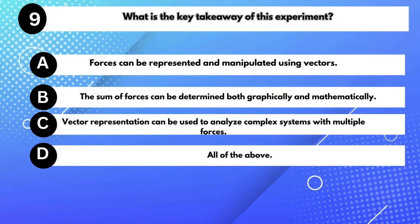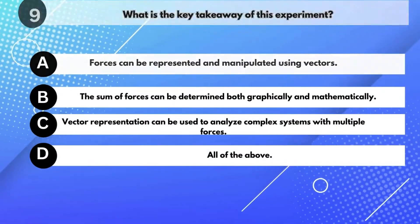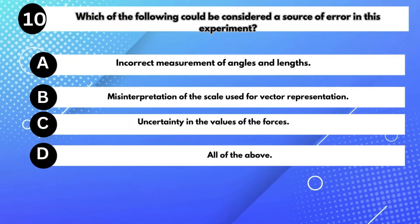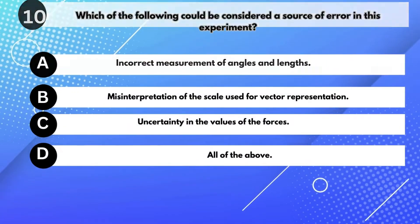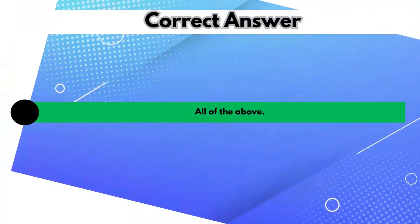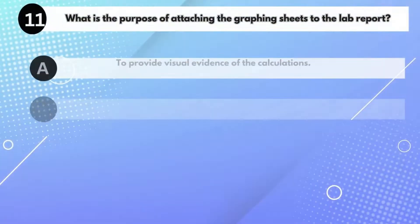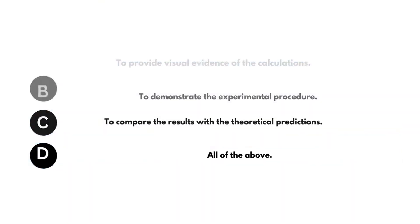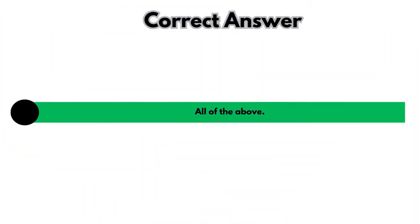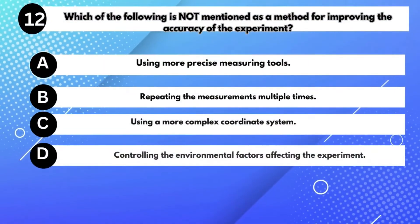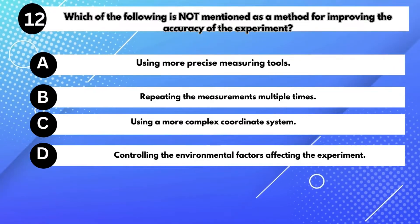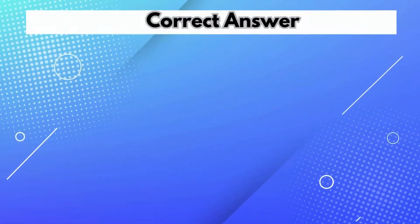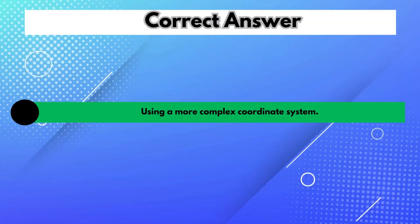What is the key takeaway of this experiment? Answer D: All of the above. Which of the following could be considered a source of error? Answer D: All of the above. What is the purpose of attaching the graphing sheets to the lab report? Answer D: Both A and B. Which of the following is not mentioned as a method for improving accuracy? Answer C: Using a more complex coordinate system.